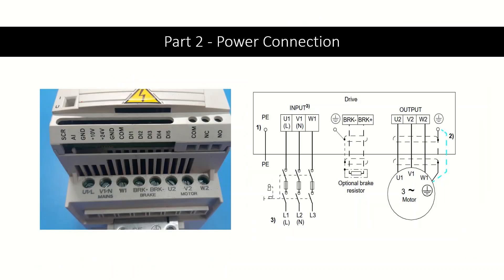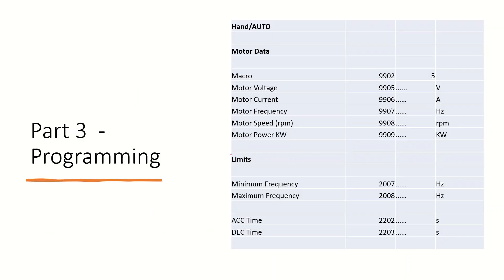For power connection: U1, V1, W1 for input supply; U2, V2, W2 for motor connection; and BRK plus, BRK minus for brake resistance if you are using the braking function. This function is optional. Now the programming part — how to enter parameters in the drive.